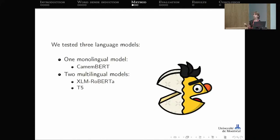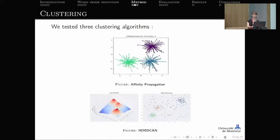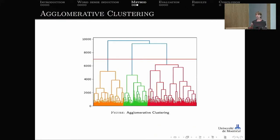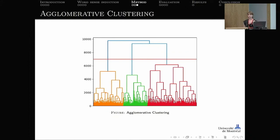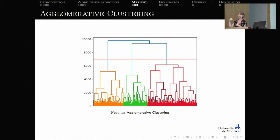Three transformer-based language model types were tested: one monolingual model, CamemBERT, and two multilingual models, XLM-RoBERTa and T5. Once embeddings were extracted, three clustering algorithms were tested: affinity propagation, HDBSCAN, and agglomerative clustering — the one ultimately used. Agglomerative clustering begins by treating every item as its own cluster and merges them iteratively until one cluster remains, stopping based on a distance threshold parameter. For example, a threshold at 7,000 yielded three clusters.